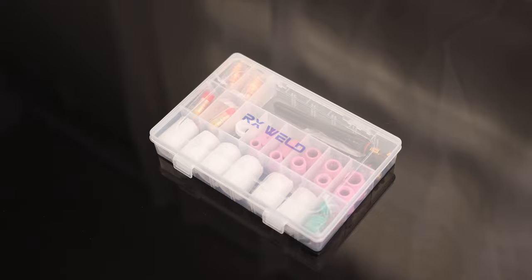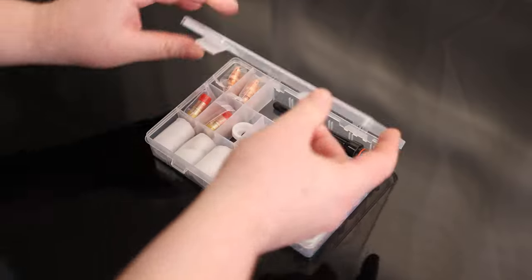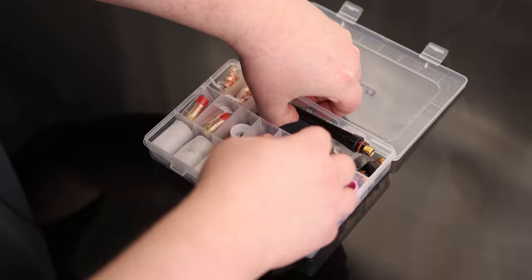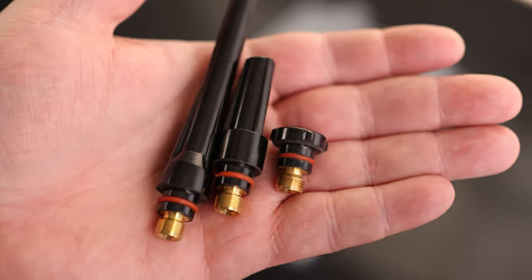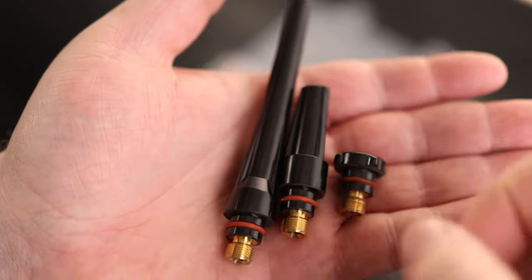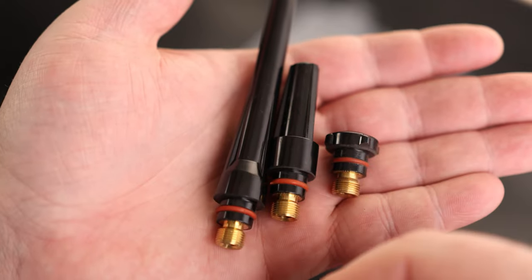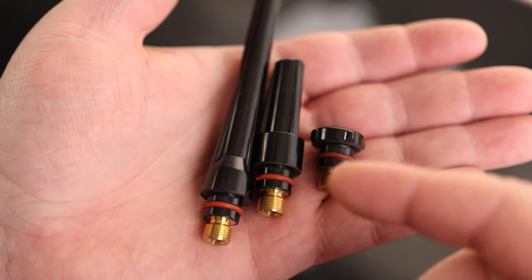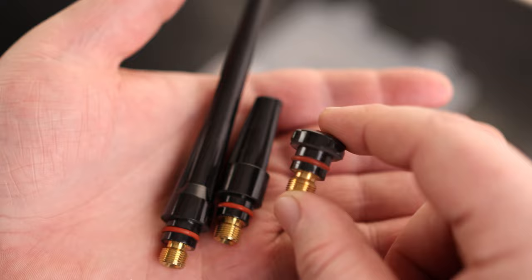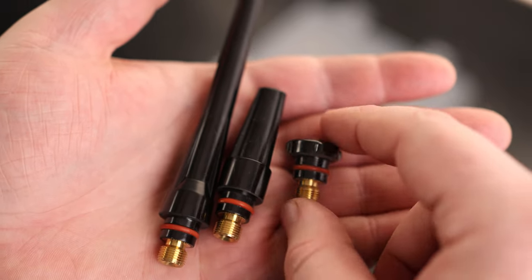All right, Tim, take a look at the RxWeld TIG Accessory Kit. So we got three sizes of back caps - the short, the middle, and the long. If you want to run long pieces of tungsten, you can use that. If you want to cut them into smaller pieces so you got more that are already perfectly ground, you can use that. And if you just need extra space to fit your torch in, you can run real short tungsten with this cap.